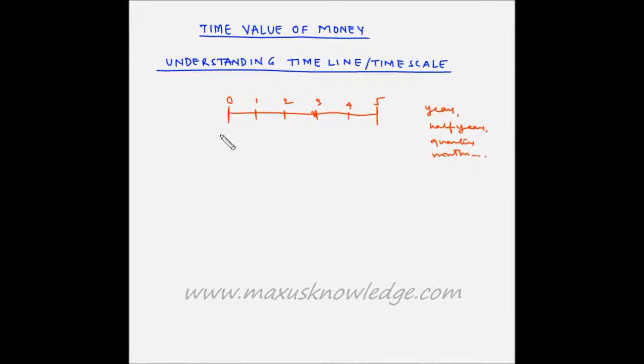Now the cash flows are placed directly below the tick marks and the interest rates are shown directly above the timeline. Unknown cash flows, which you are trying to find in the analysis, are shown by question mark. So I have shown the interest rate and the cash flows on this time scale.